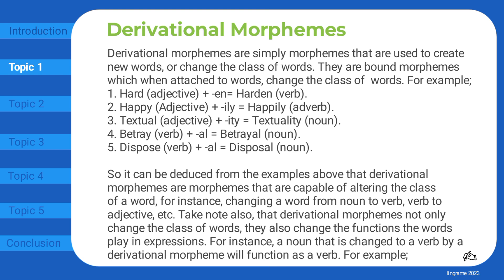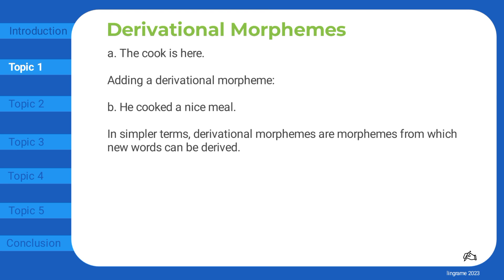For instance, a noun that is changed to a verb by a derivational morpheme will function as a verb. For example: 'The cook is here' — adding a derivational morpheme — 'He cooked a nice meal.' In simpler terms, derivational morphemes are morphemes from which new words can be derived.